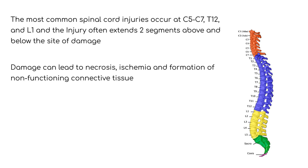The damage may include hemorrhage in the spinal cord gray matter and meninges that can lead to necrosis. Hemorrhage to the white matter of the spinal cord can lead to damage from ischemia. Macrophages respond to damage by ingesting axons and damaged meningeal tissue by way of phagocytosis. These tissues are then replaced by non-functioning connective tissue that further alters spinal cord function.